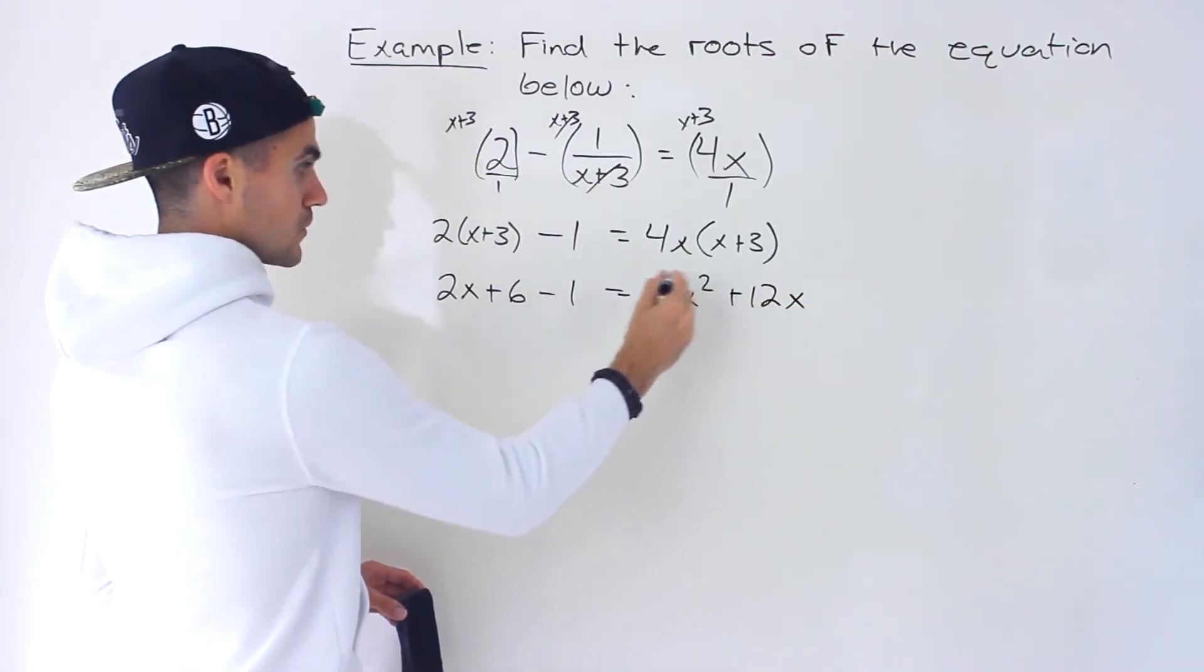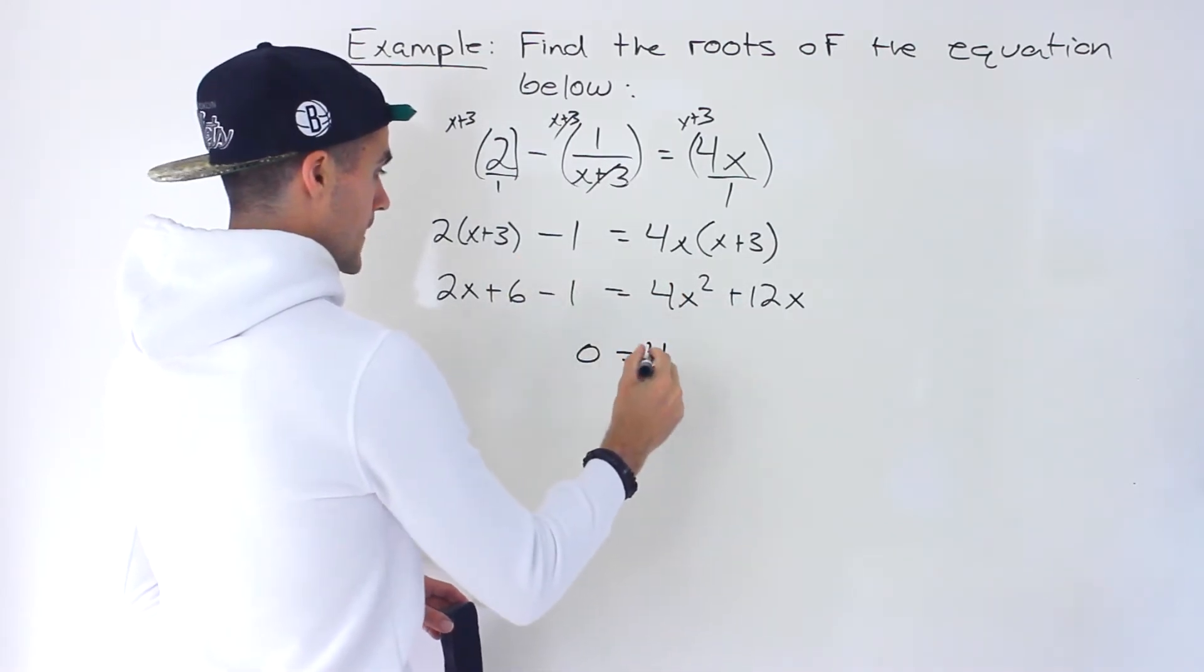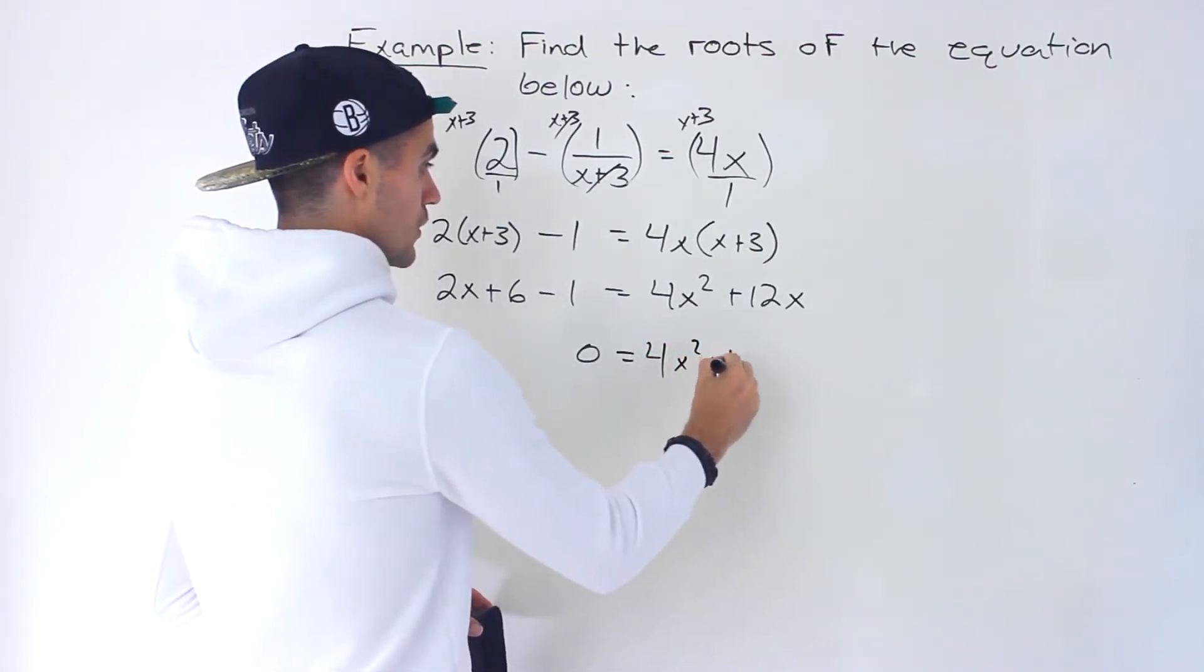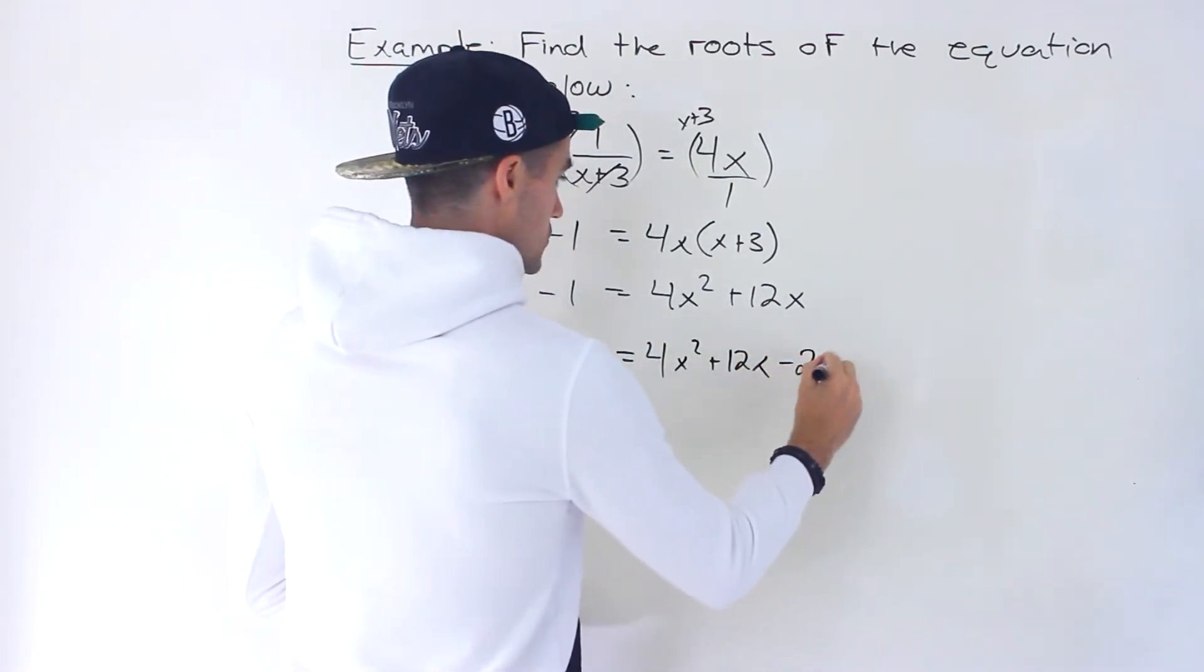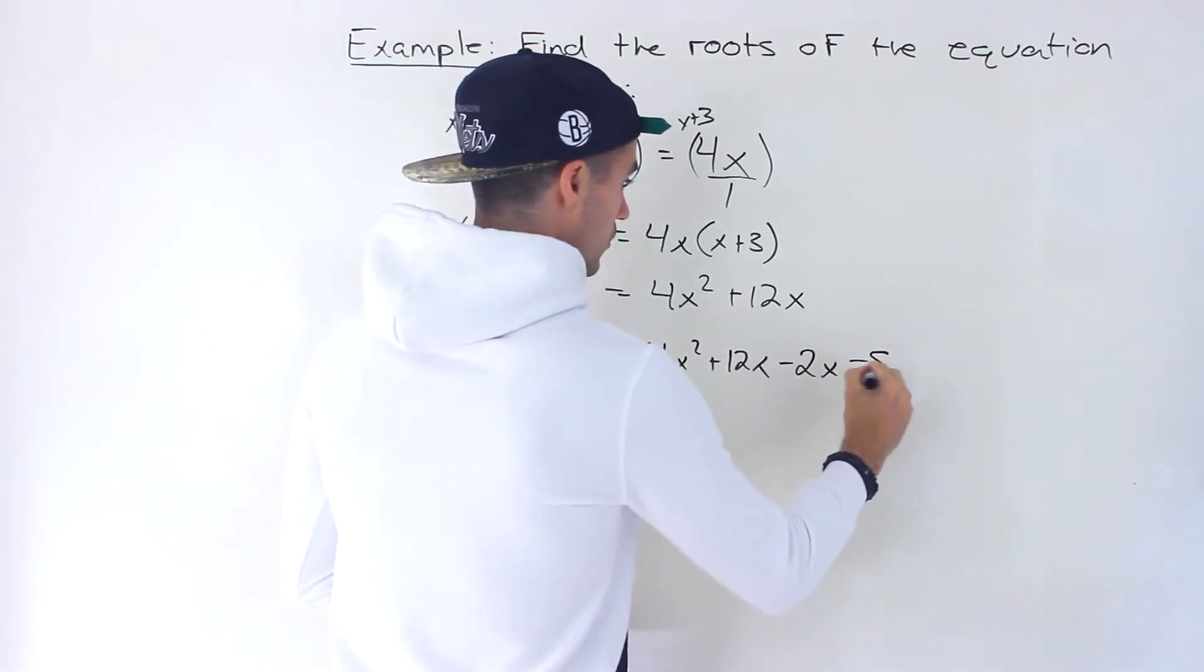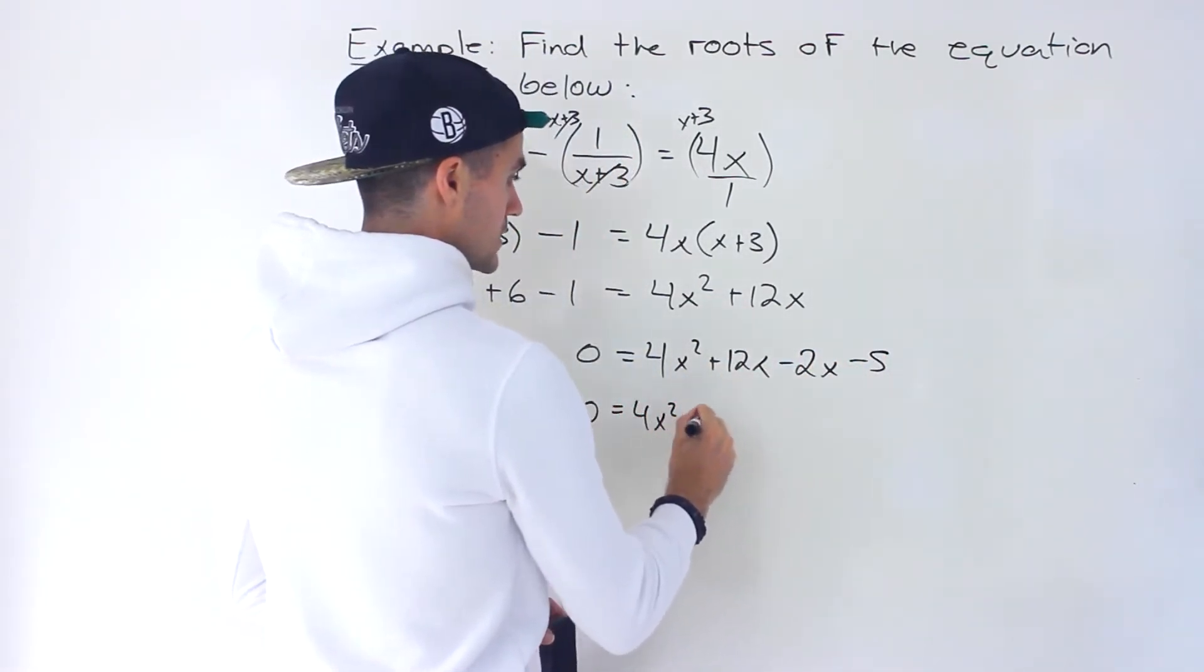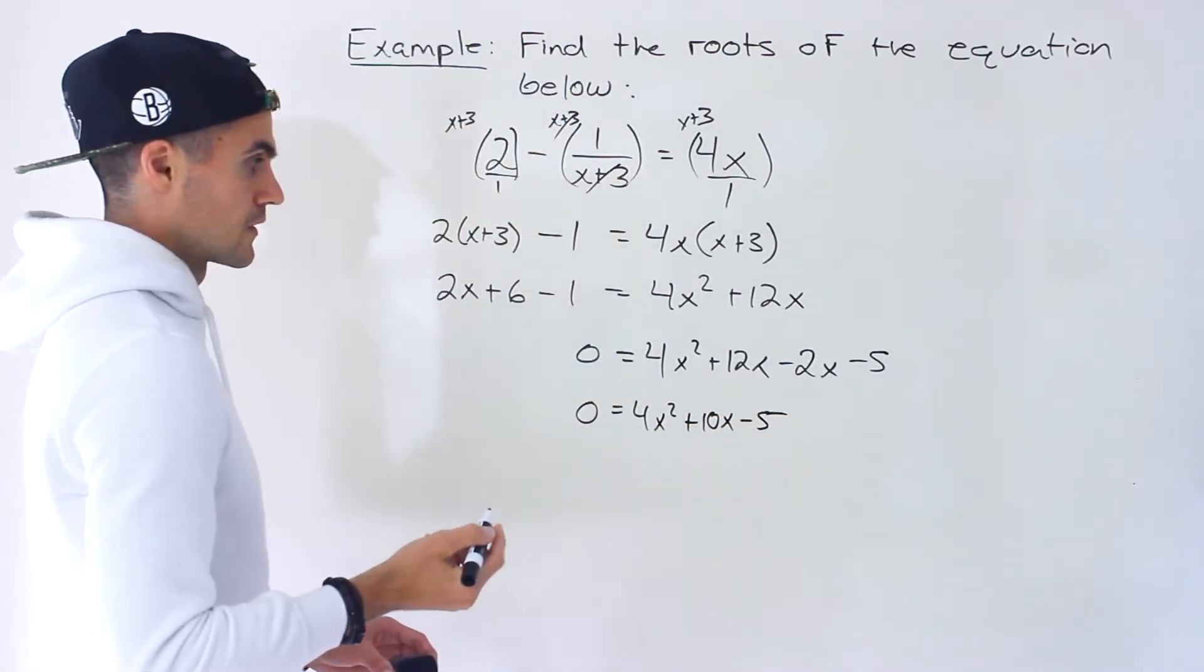And so here we have an x squared. It's positive. So I'm going to bring everything over to the right side. So we'll have 4x squared plus 12x. And then this 2x I'll bring over. We'll have minus 2x. Notice that these two net out to positive 5. When we bring it over it'll be negative 5. So we'd have 0 equals 4x squared plus 10x minus 5.